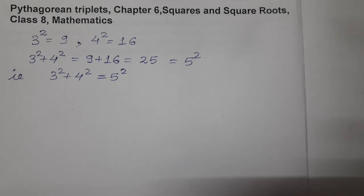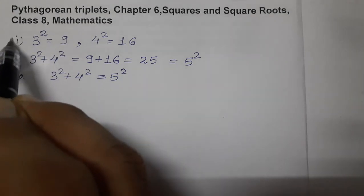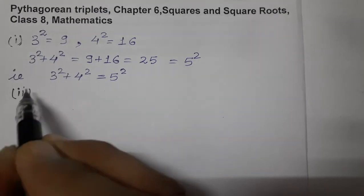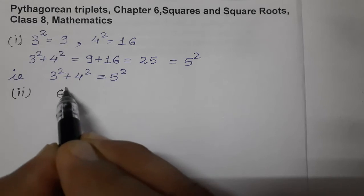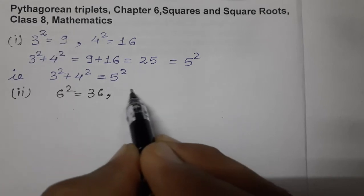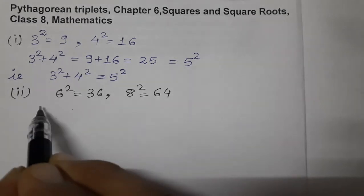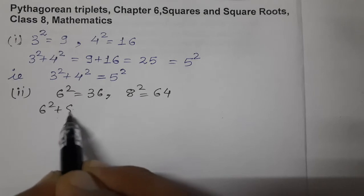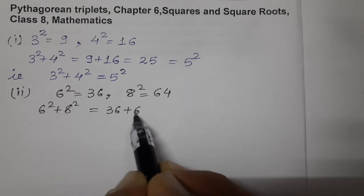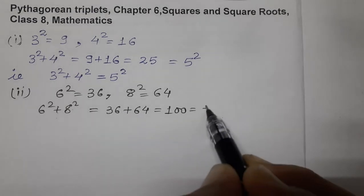Now consider one more example. Now take number 6. 6 square is 36. Now 8. 8 square is 64. Now add them. 6 square plus 8 square means 36 plus 64, so that is 100, and 100 is the square of 10.